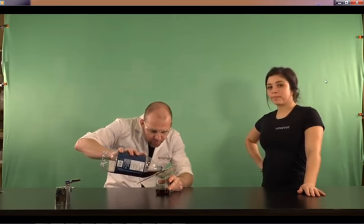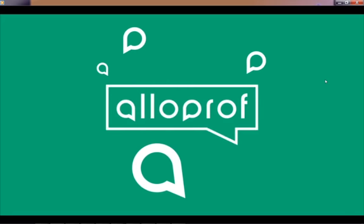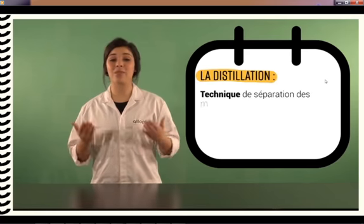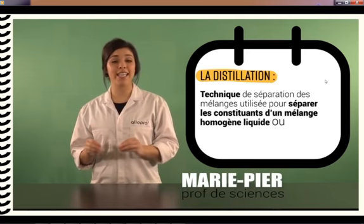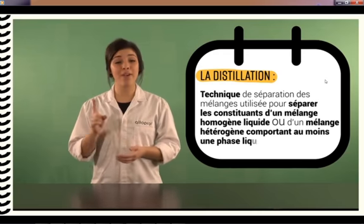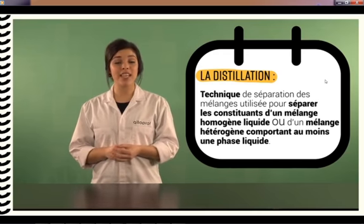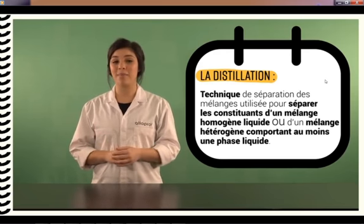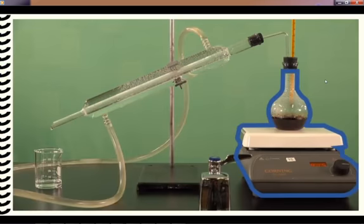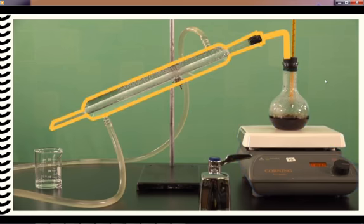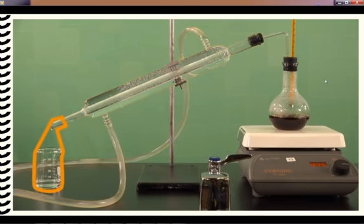La distillation est une technique de séparation des mélanges qui permet de séparer les constituants d'un mélange homogène liquide ou d'un mélange hétérogène comportant au moins une phase liquide. Cette technique se base sur le point d'ébullition des substances. La distillation consiste à chauffer le mélange jusqu'à ce que l'une des substances atteigne son point d'ébullition. Cette substance se transforme en gaz, se rend jusqu'au tube réfrigérant qui la refroidit grâce à l'eau froide circulant autour, entraînant la condensation. Le distillat s'écoule dans le bécher.